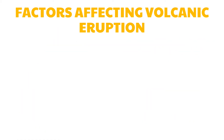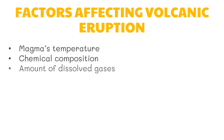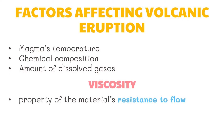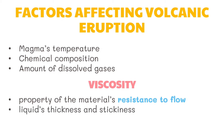So what determines the nature of volcanic eruption? The primary factors affecting volcanic eruption are the magma's temperature, its chemical composition, and the amount of dissolved gases it contains. These factors can affect the magma's viscosity in different ways. Viscosity is the property of a material's resistance to flow — also described as the liquid's thickness and stickiness. The more viscous and thicker the material is, the greater is its resistance to flow.